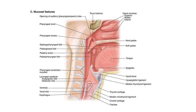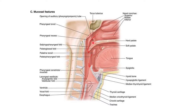The air passage comes from the nasopharynx and the food passage from the oropharynx. This ring is encircling obliquely the area of the air and food passage.